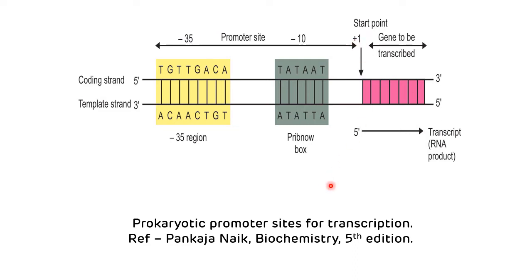The second promoter site in the prokaryotic cell is the minus 35 region, called so because it is 35 nucleotides upstream from the start point, and it has a consensus sequence of TTGACA. These are the promoter sites in the prokaryotic cell that are identified by the sigma factor present in the RNA polymerase enzyme.